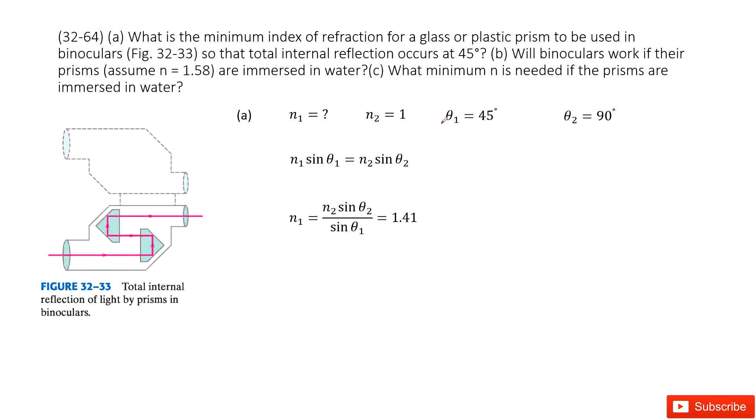Theta 1 is 45 degrees because this shows you the total internal reflection occurs at 45 degrees. And because this is total internal reflection, theta 2 is given as 90 degrees. So now given these three quantities, can you find n1? Yes.